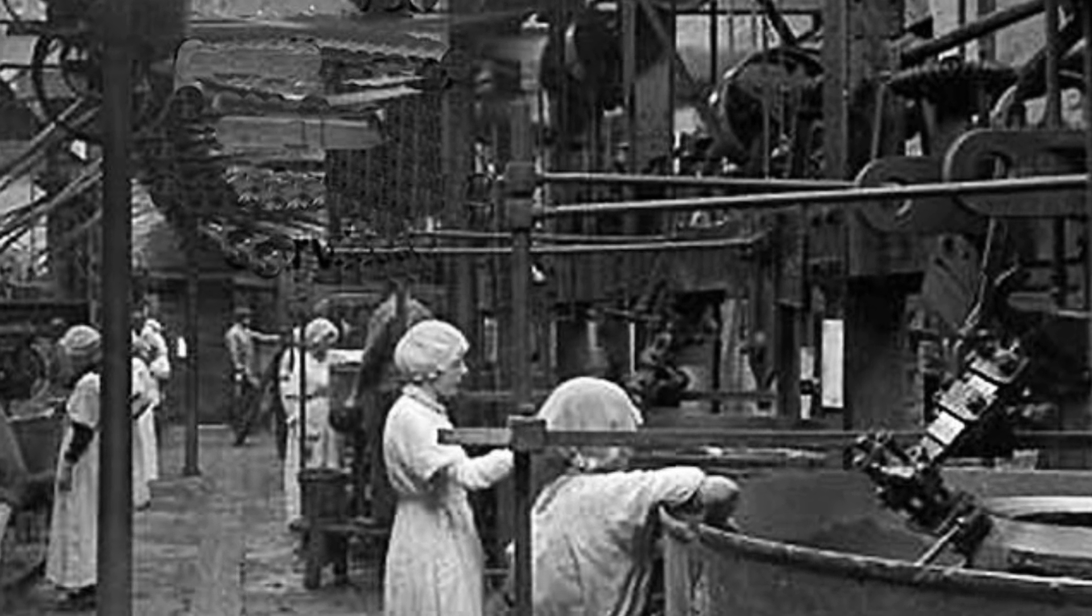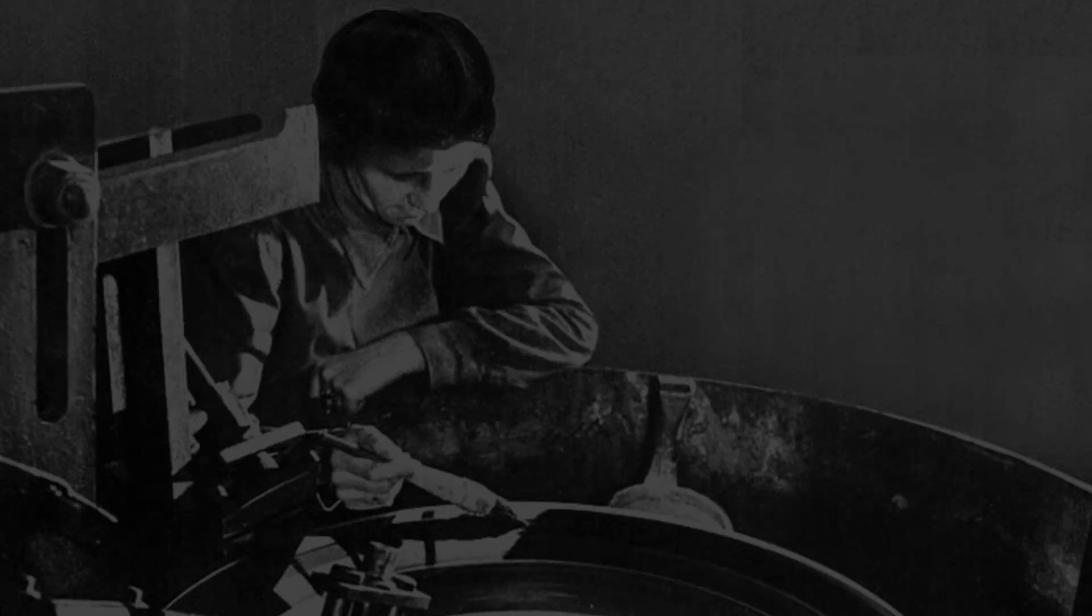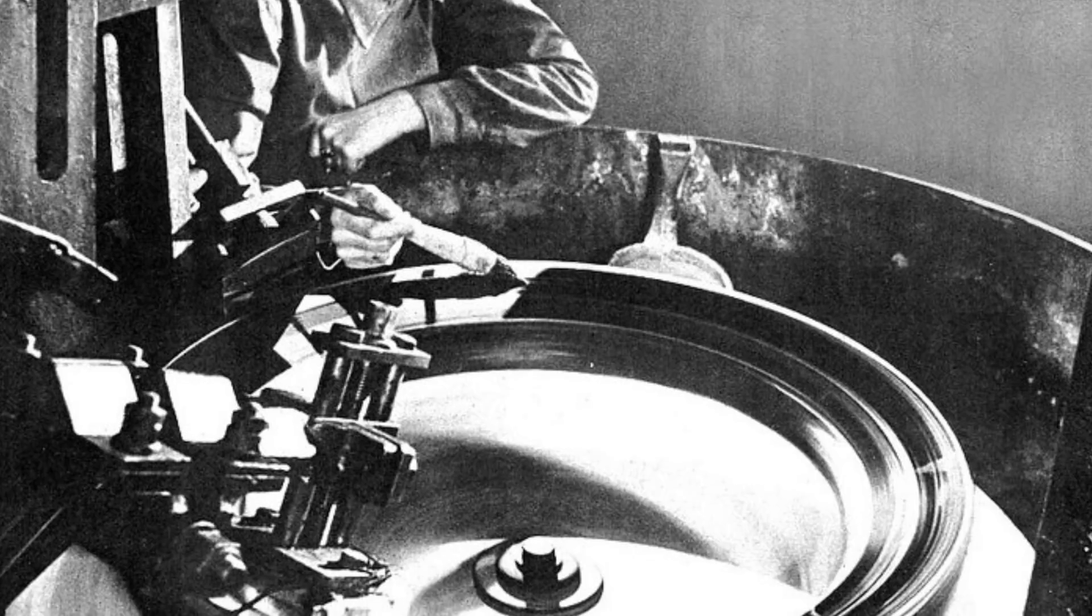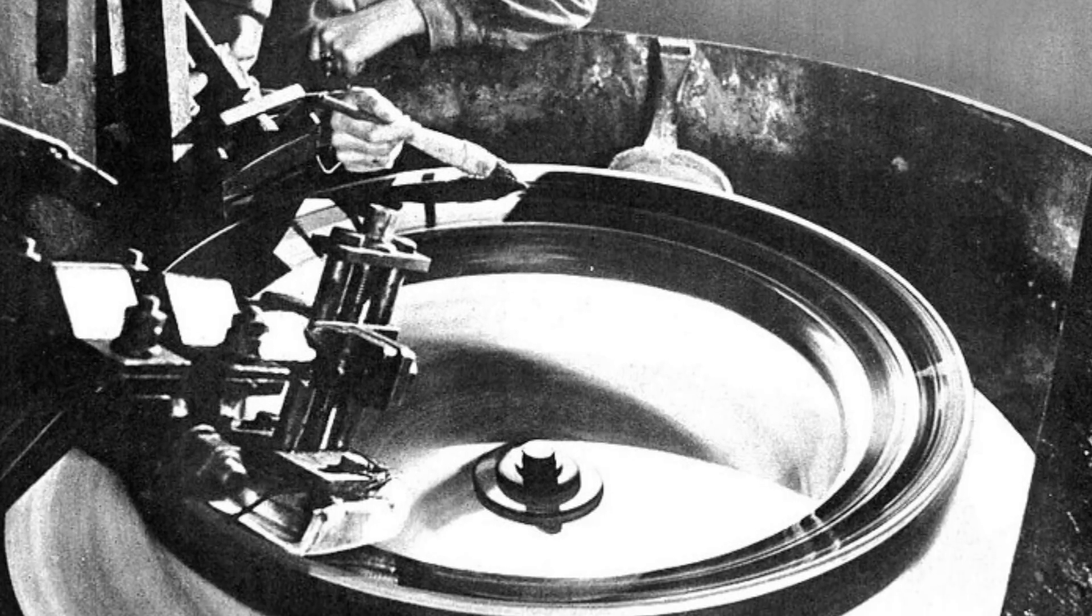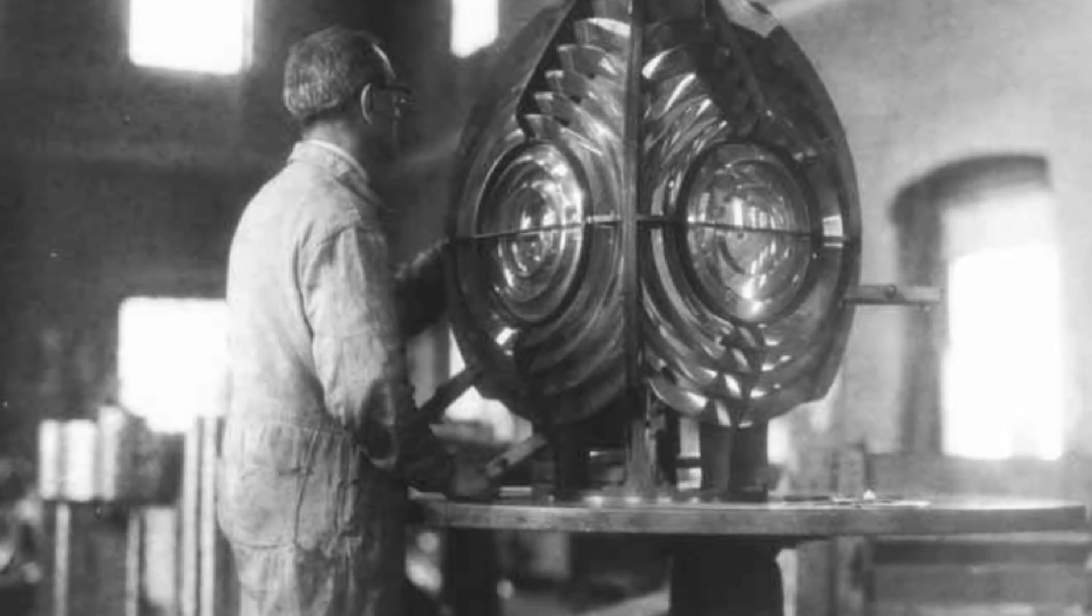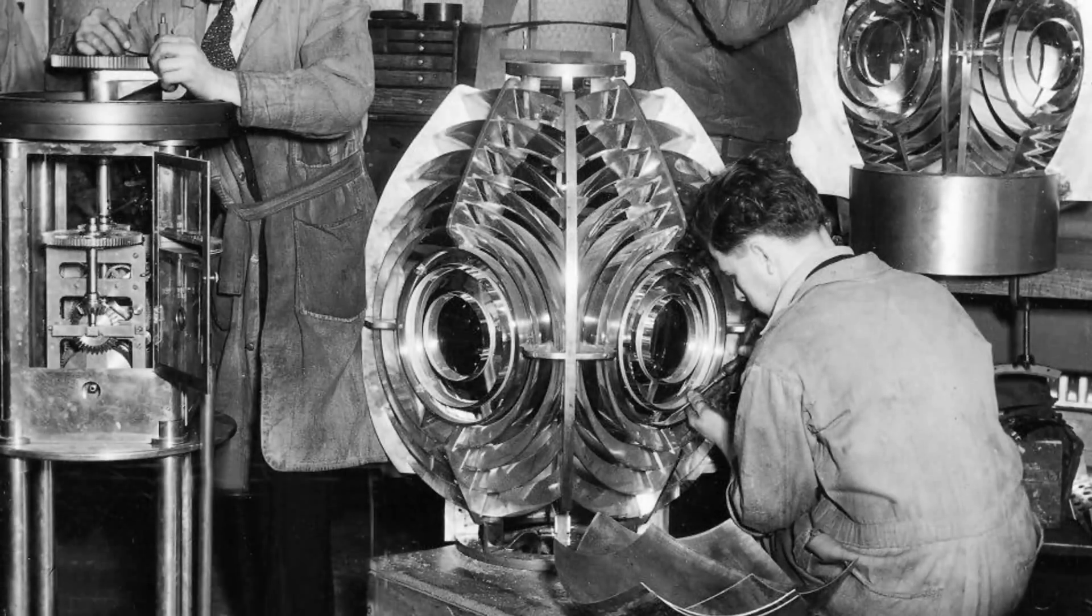Complete rings were manufactured for the bullseye lenses, but the reflecting prisms were cut into sections after machining. The lenses were shipped to the United States, most of them being received at the Staten Island Depot.